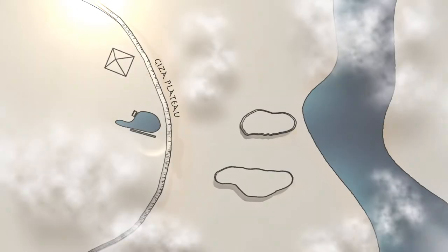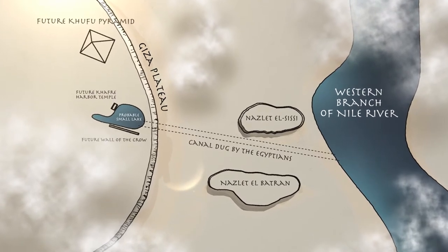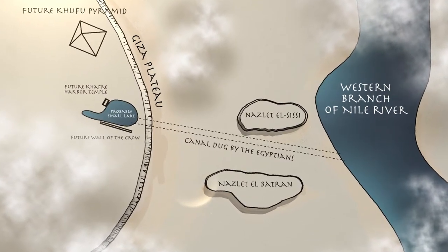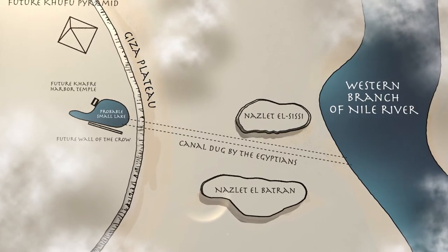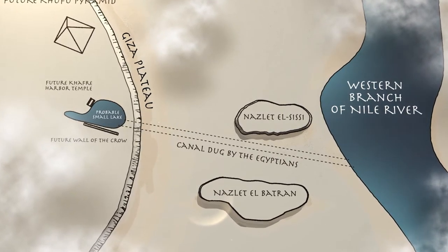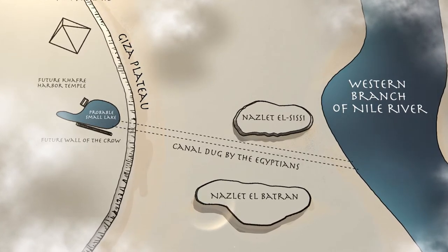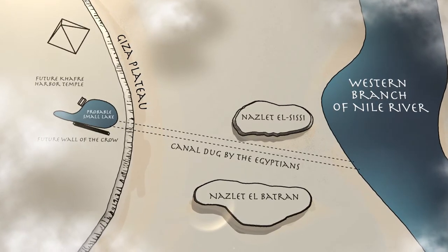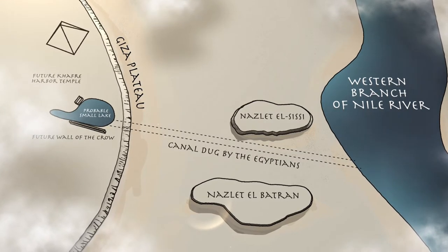When Pharaoh Khufu sent his builders to survey the future site for his pyramid, they found that the Giza Plateau offered everything needed for a colossal pyramid site. The Giza Plateau was near the Nile River and a probable small lake. The area was made of limestone layers and offered a solid foundation to support the massive pyramid. The limestone also supplied core stones for the pyramid.